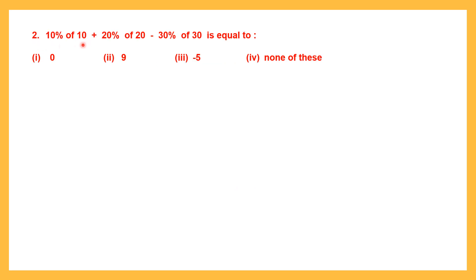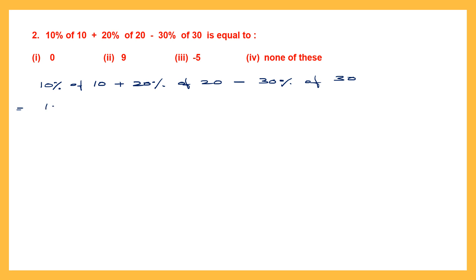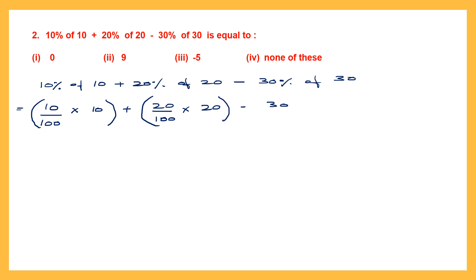Question 2. 10% of 10 plus 20% of 20 minus 30% of 30 — what does that equal? So let's solve: we have 10% of 10 plus 20% of 20 minus 30% of 30. Now 10% of 10 means 10 by 100 into 10. Plus 20% of 20 means 20 by 100 into 20. Minus 30% of 30 means 30 by 100 into 30.